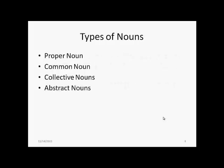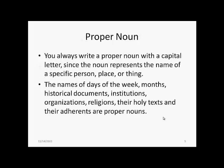If you look at the types of nouns, some of the basic types are the proper noun, the common noun, the collective noun, and the abstract noun. You always write a proper noun with a capital letter since the noun represents the name of a specific person, a place, or a thing.